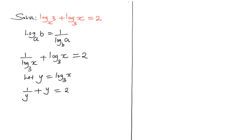To get rid of the fraction 1 over y, we can multiply every entry of this function by y. So we multiply 1 over y by y, multiply y by y, and multiply 2 by y. The y will cancel, leaving 1 plus y times y, which is y squared, and on the other side we have 2 times y, which is 2y.